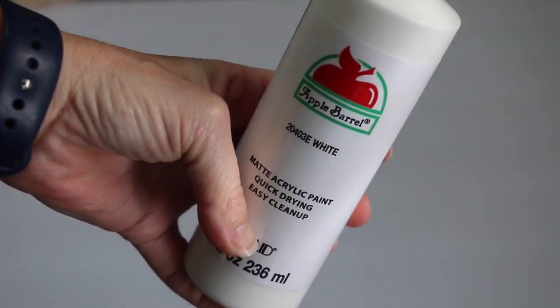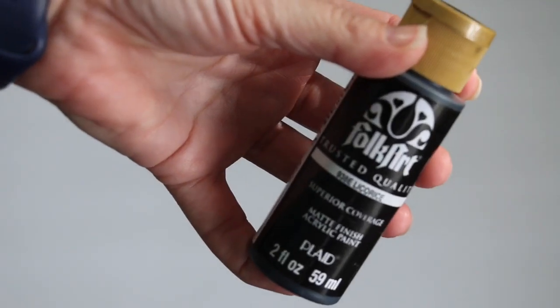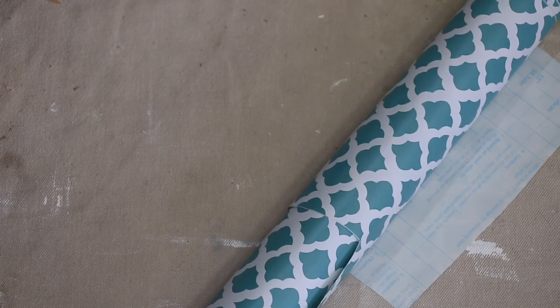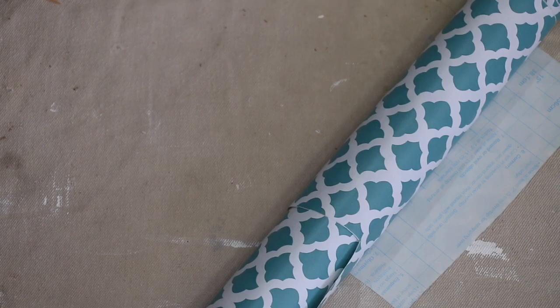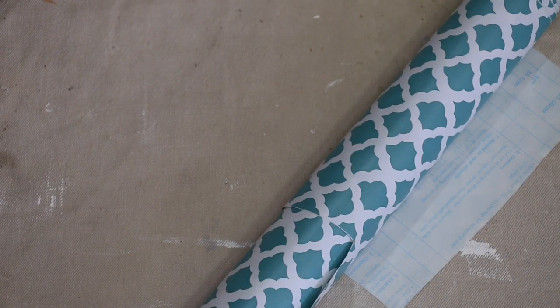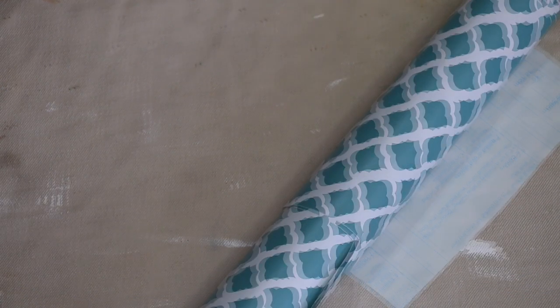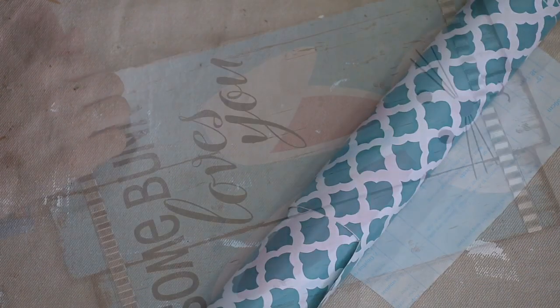You will also need some white acrylic paint as well as some black acrylic paint. Now this is optional, but I will be using some contact paper to cover up the back of the sign to give it that finished polish look for that 360 appearance that I am going for. And so if you want to have that too, you will need some contact paper.